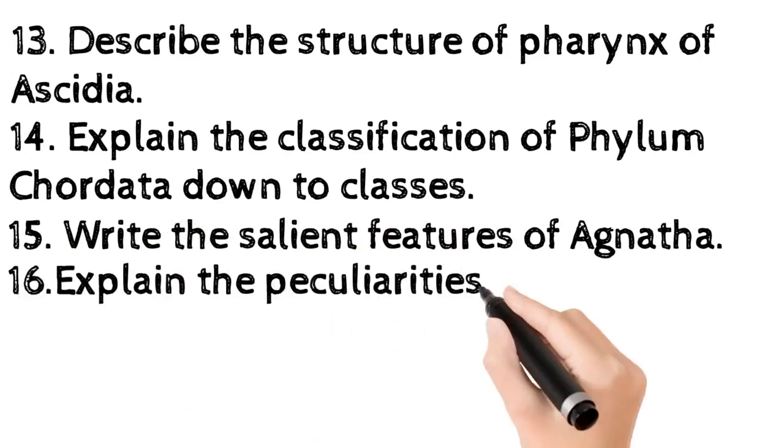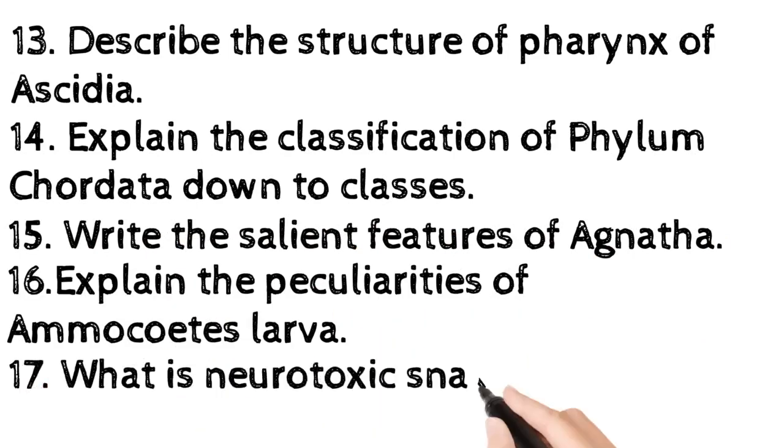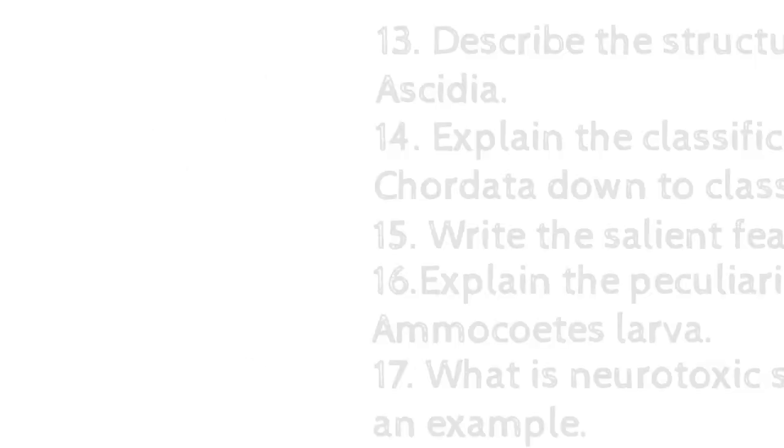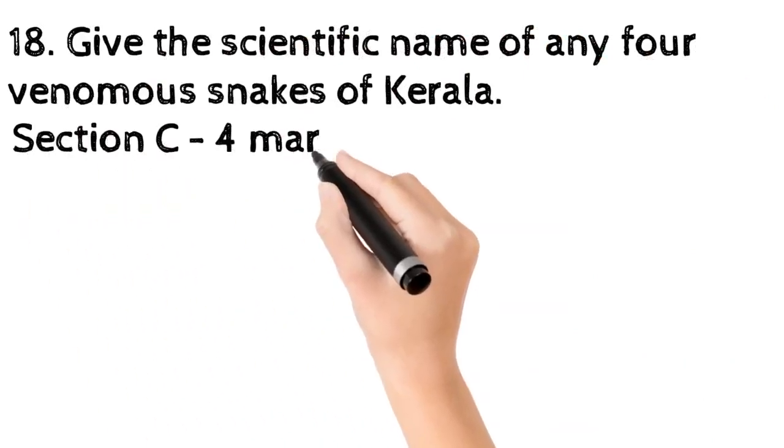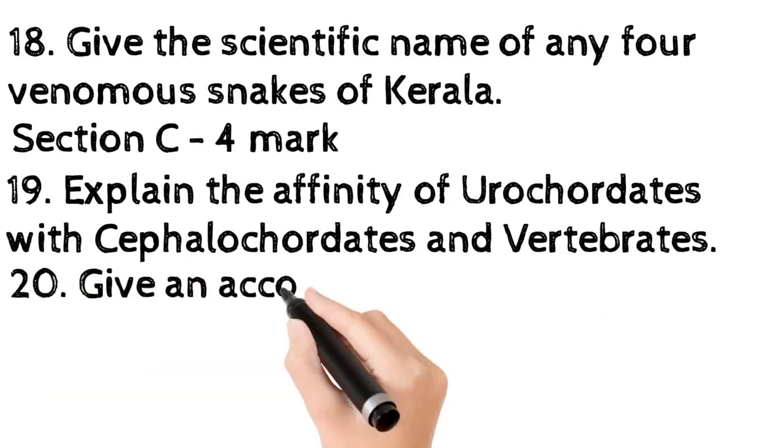Seventeen, what is neurotoxic snake venom? Give an example. Eighteen, give the scientific name of any four venomous snakes of Kerala. Section C, 4 mark. Nineteen, explain the affinity of Urochordates with Cephalochordates and Vertebrates.